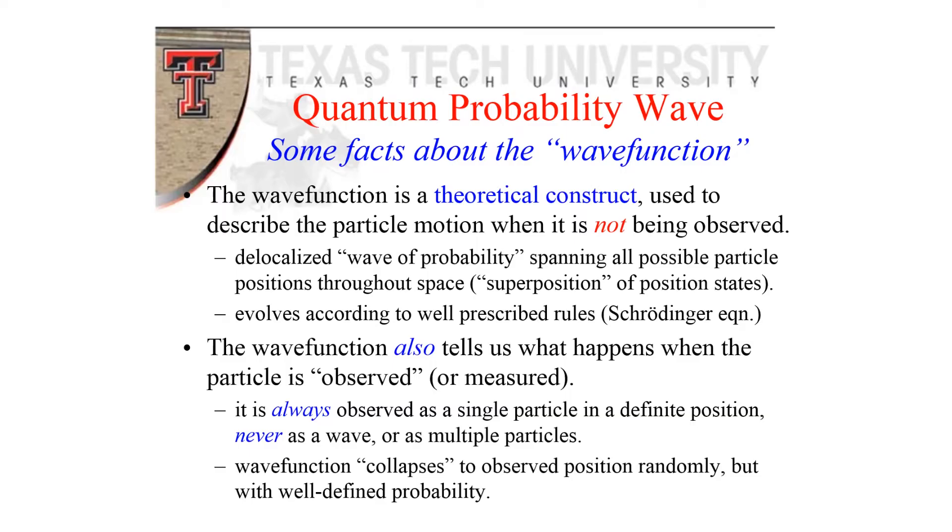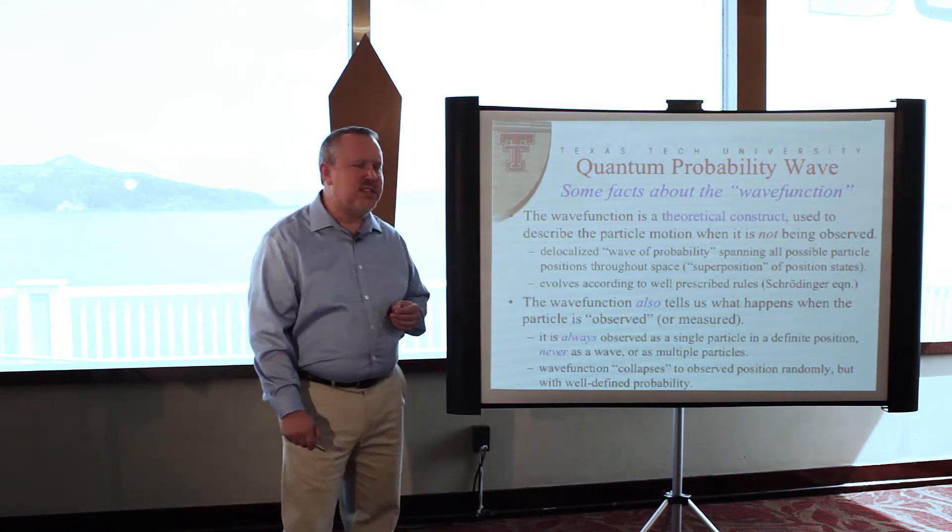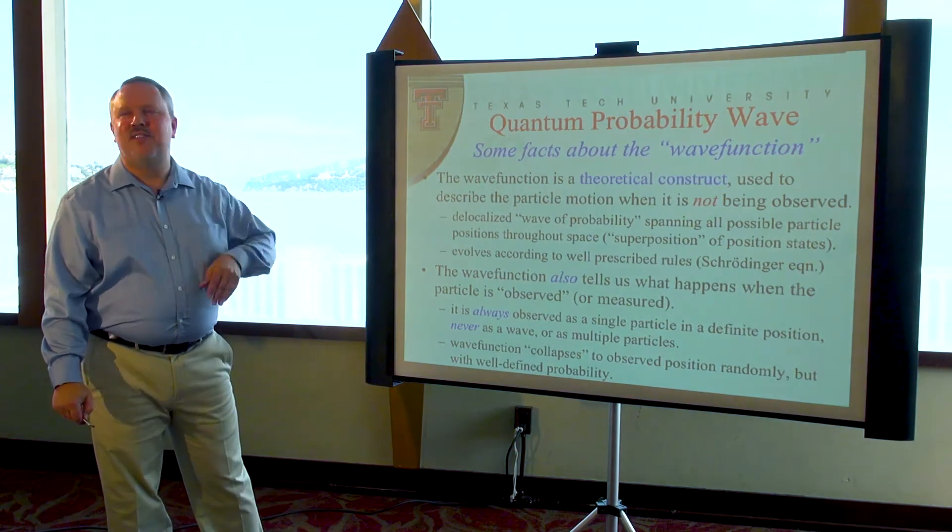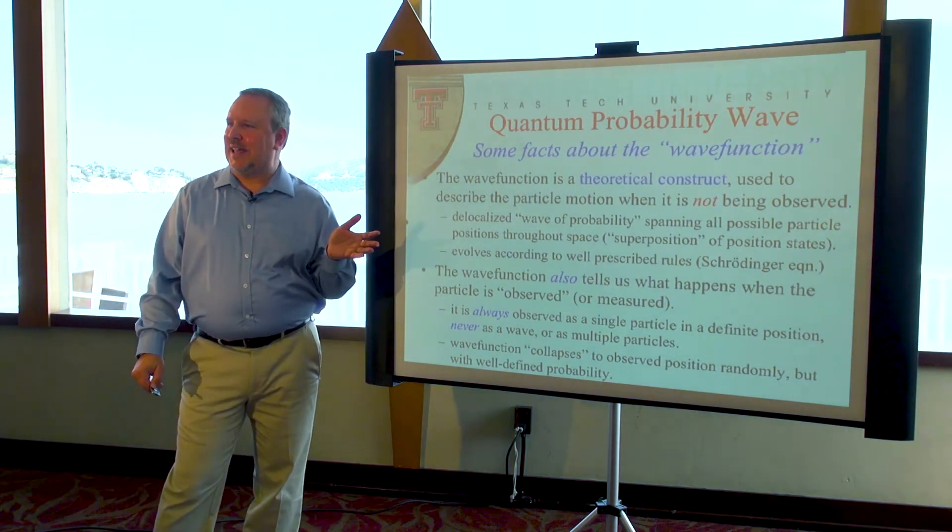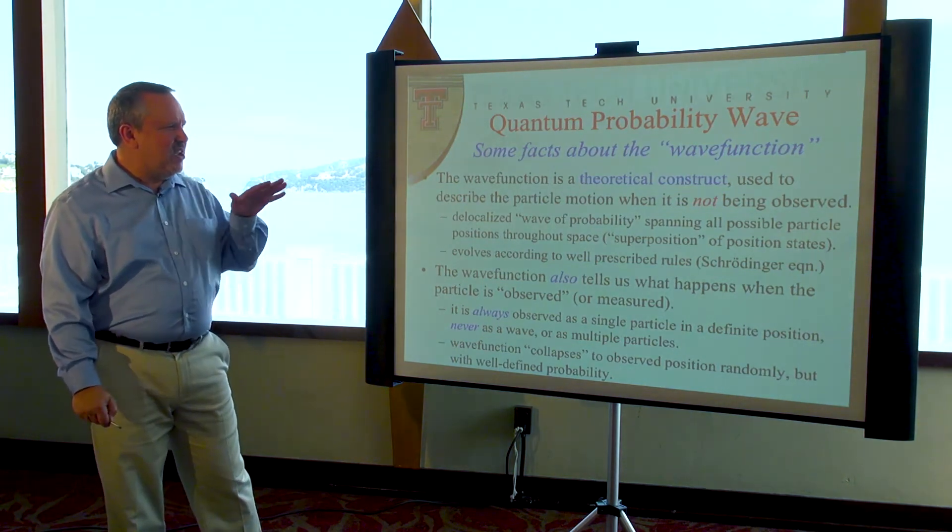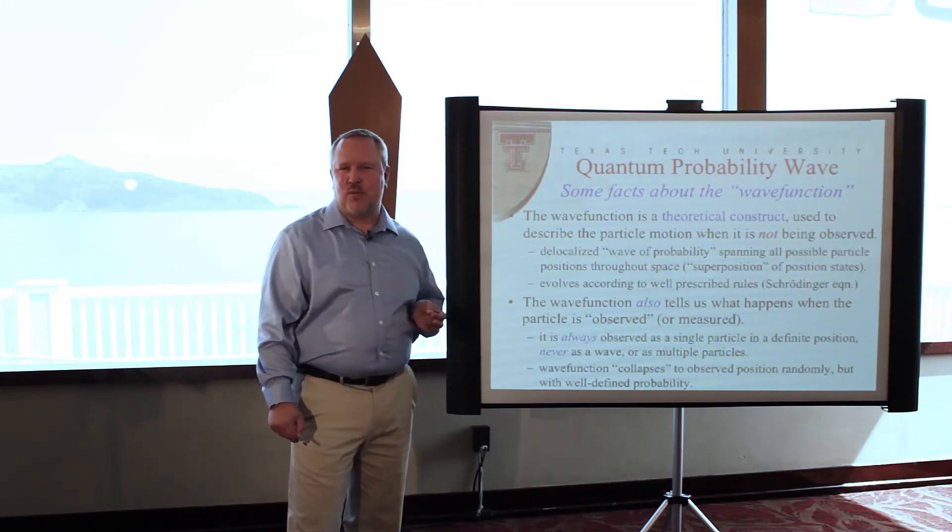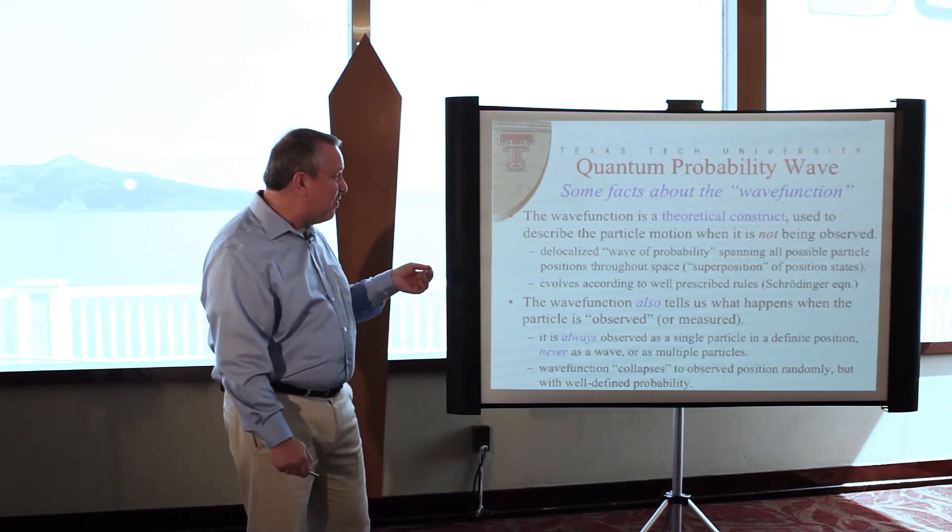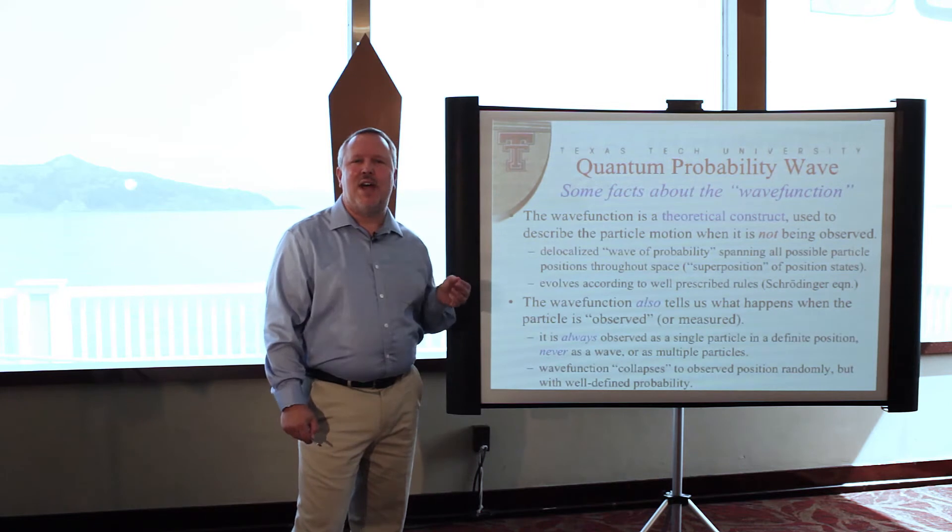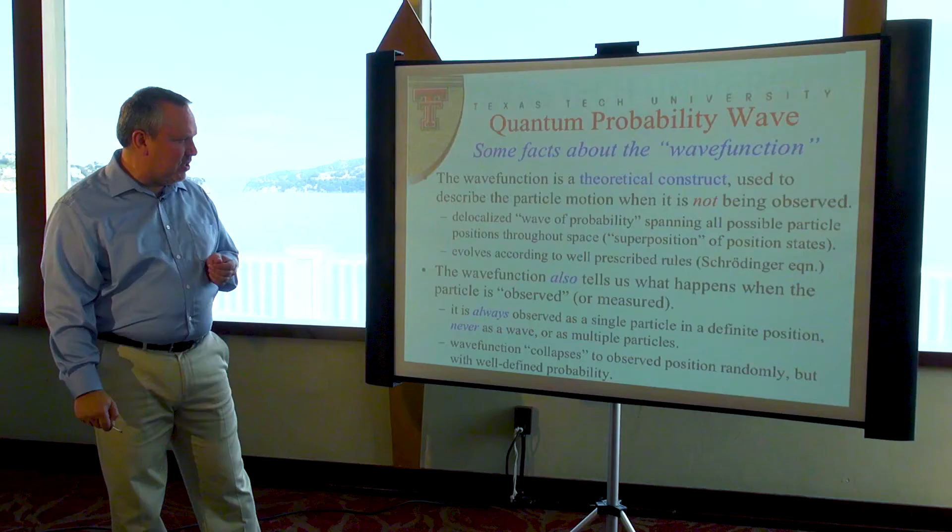Now we're going to get a little bit technical and discuss how quantum objects behave when they're acting as a wave. When they're acting as a wave, they're described by something we call the wave function. So what is the wave function? It's a theoretical construct used to describe the particle motion when it is not being observed. It's a kind of wave of probability. Now some people might object to my use of the phrase theoretical construct. There's still actually a lot of debate about whether the wave function is a real thing that physically exists or not. I use this language though because a wave is never observed as a wave. When we observe quantum objects, we always observe them as particles, not as waves. We can infer a wave, but we never actually see a wave when we make an observation.